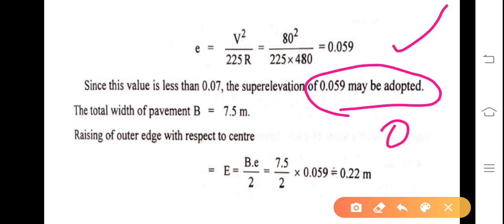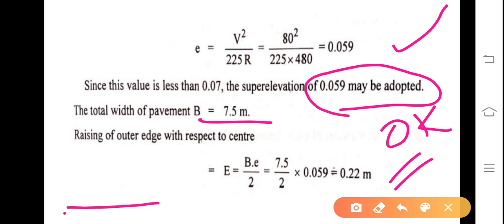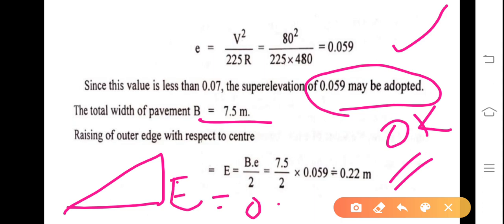The total width of the pavement b is equal to 7.5 meters as given. Rising the outer edge with respect to the center: e = (b/2) × e_rate = (7.5/2) × 0.059 = 0.22 meters. So the raising of the outer edge with respect to the center line is 0.22 meters.